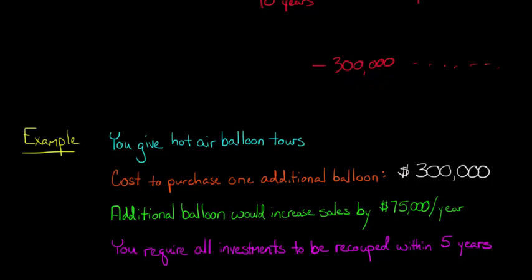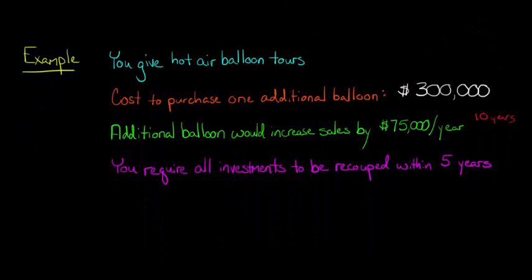So first we need to know, well, what kind of sales increase do we expect? In this case, let's say we estimate $75,000 a year. Now you could say, let's say for the next 10 years. So for the next 10 years, you're going to get $75,000 a year, increased sales because of buying this balloon for $300,000. And so for your company, you say, you know what? I don't want to make an investment unless it's going to pay for itself within five years. If it's not going to pay for itself within five years, I don't think it's a good investment.